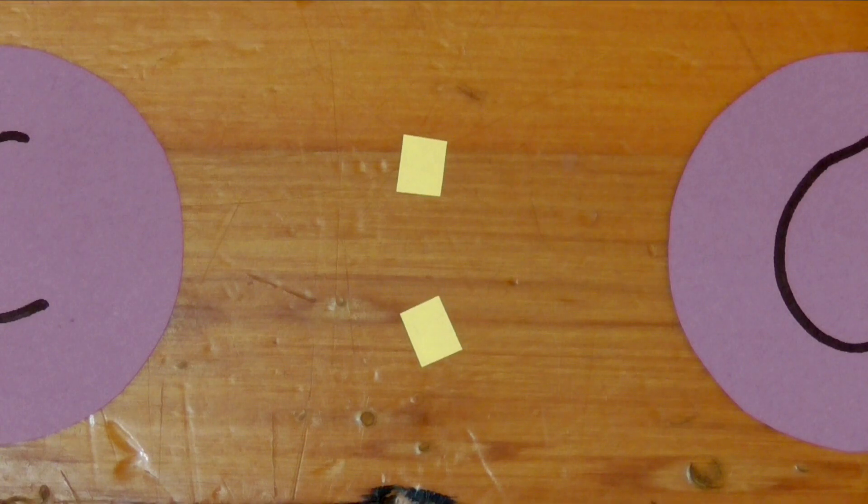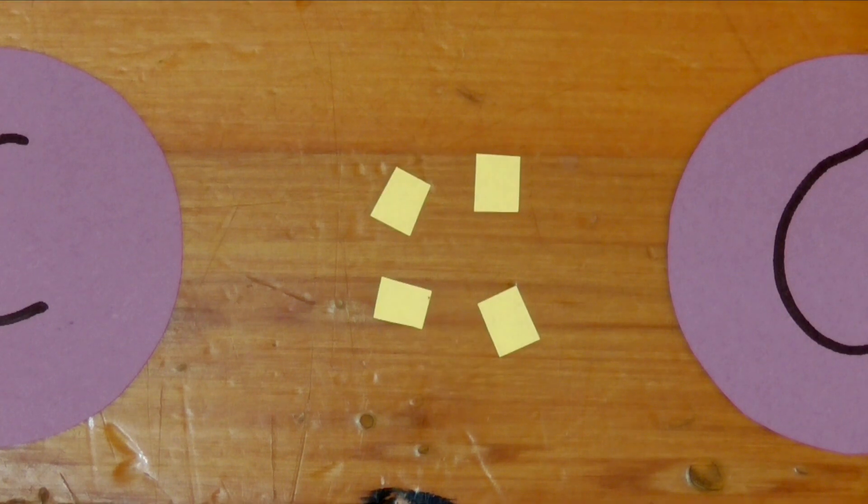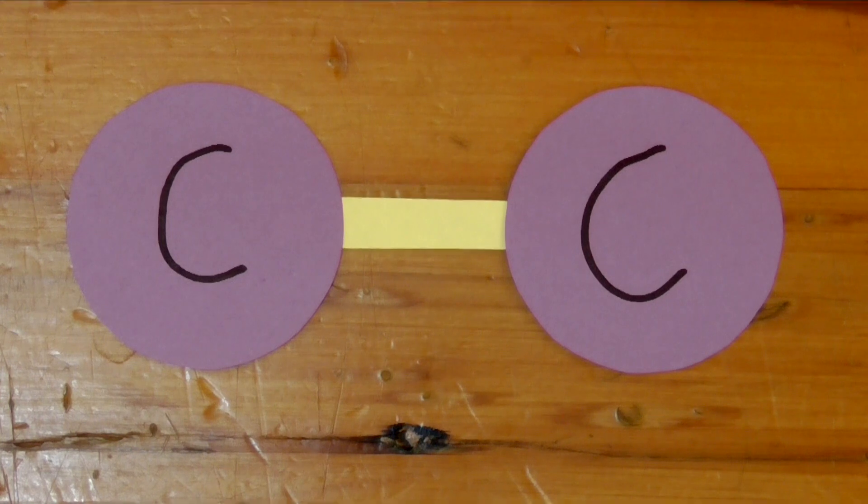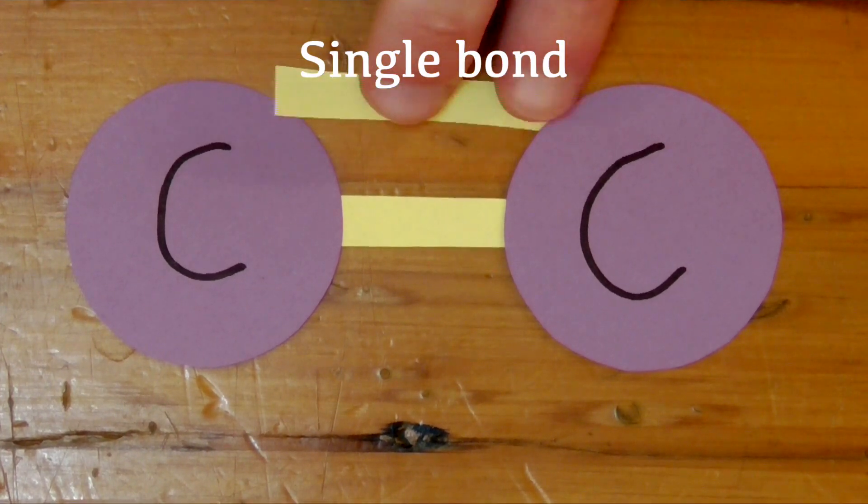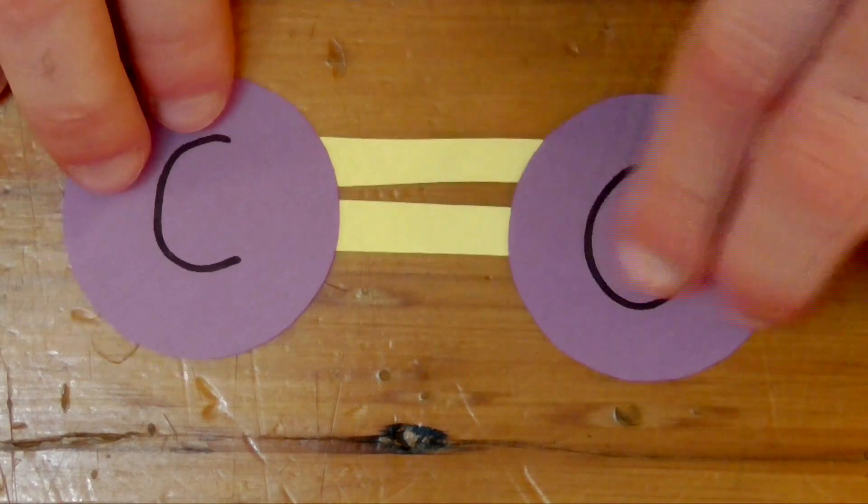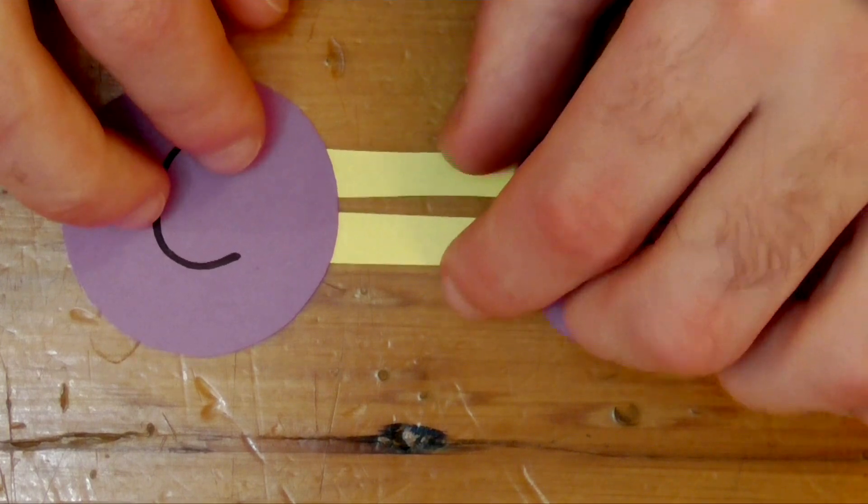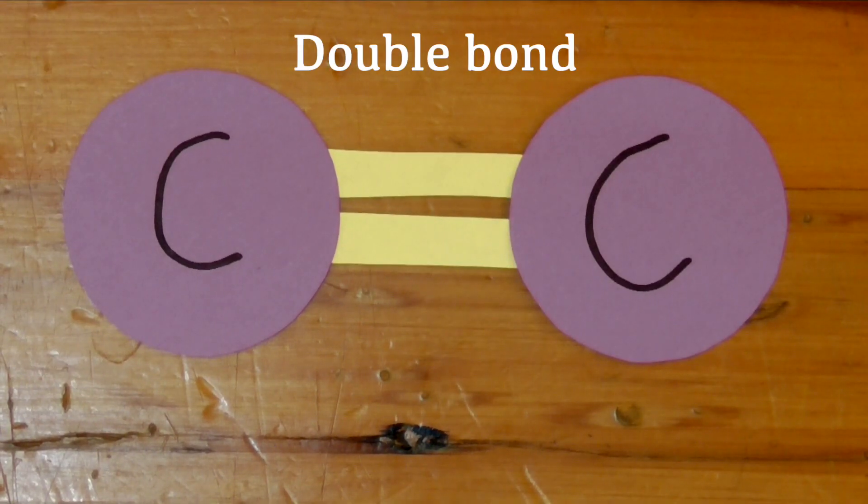We can also change the nature of some of these covalent bonds. Adjacent carbon atoms are able to share two, four or six electrons between themselves, resulting in different molecules forming. A covalent bond formed by two electrons is a single bond, as we have already seen. A covalent bond in which four electrons are involved, two from each atom, is known as a double bond. It's often represented with two parallel lines. Finally, a covalent bond with six electrons, three from each atom, is a triple bond.